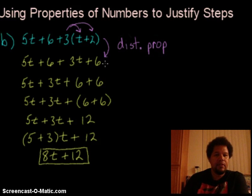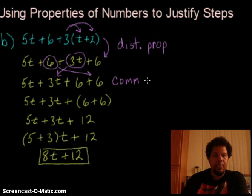So now to get to this next step right here we have 5t plus 6 plus 3t plus 6, and what happened? They moved this 3t - it ended up moving over here - and this 6 right here ended up moving over here. And which property allows us to move terms around when it's addition? It's called the commutative property of addition. So that's how we got from this step to this step.